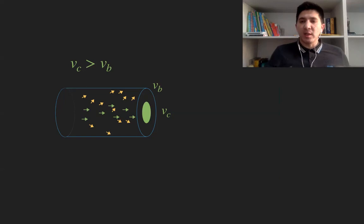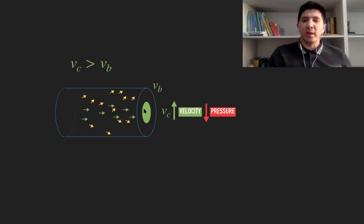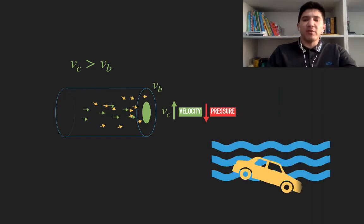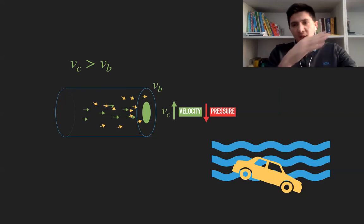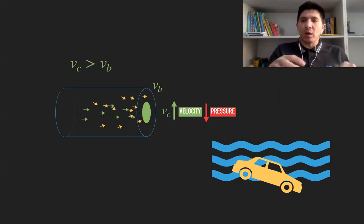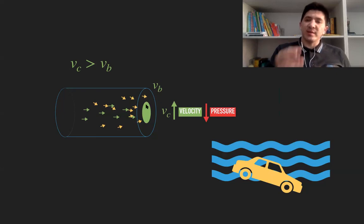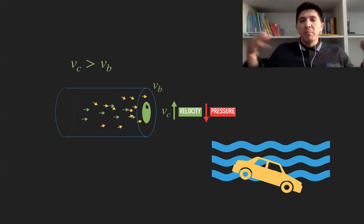Remembering Bernoulli's equation — if I increase the velocity, the pressure is going to decrease — then the pressure in the center of the pipe is smaller than the pressure at the borders. Since the pressure in the center is smaller, lots of particles are going to move toward the center. You can imagine this like a car going into water: the pressure outside the car is higher, so if you open a window, water tries to come inside since the pressure inside the car is smaller than outside.